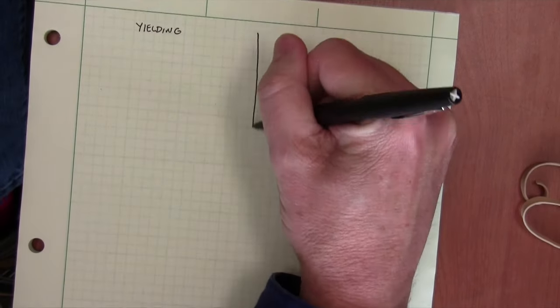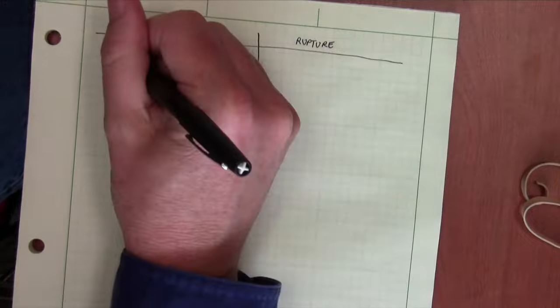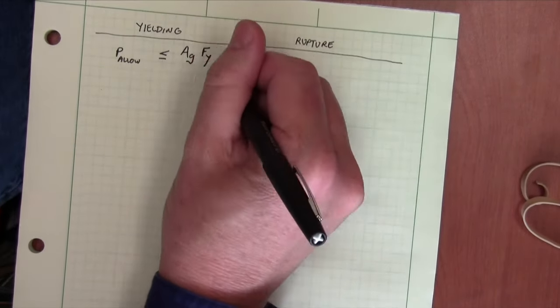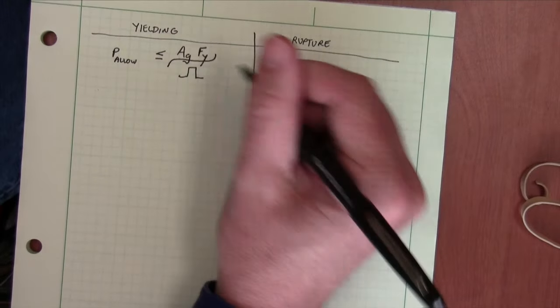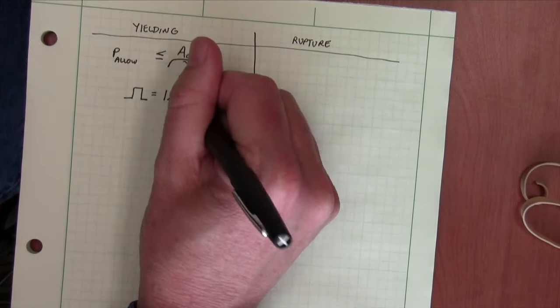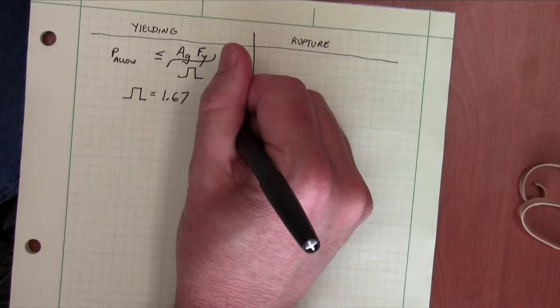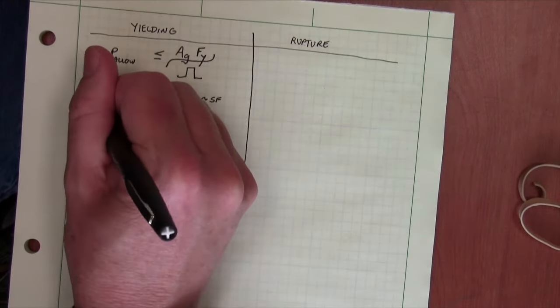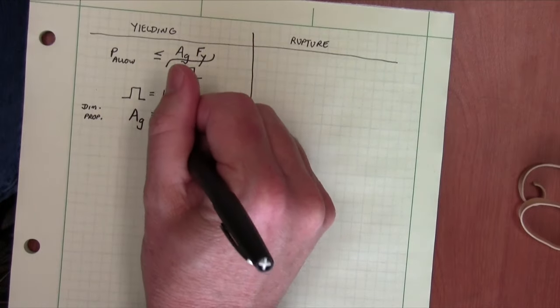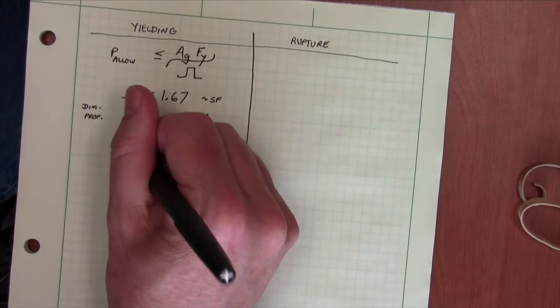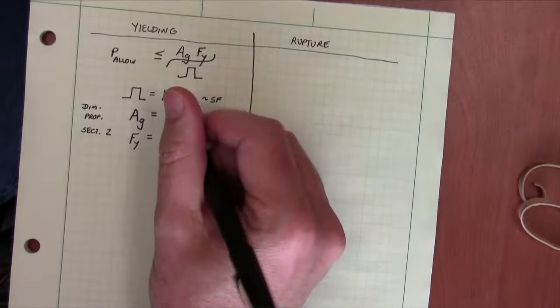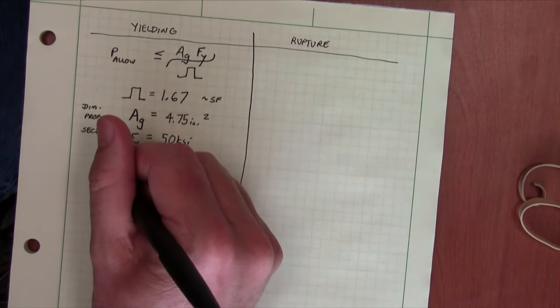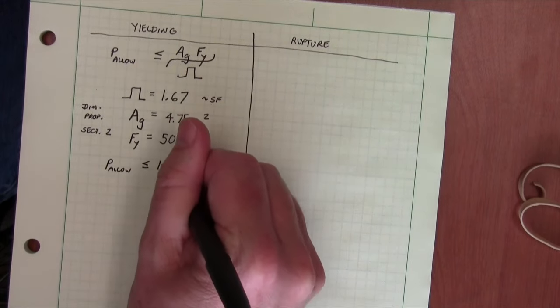So now let's look at the calculation of these values, rupture and yielding. For yielding, the allowable load is equal to the gross area times the yield stress over our safety factor omega. Omega is 1.67 for yielding. The gross area is simply the cross-sectional area of the member that's found in the dimensional properties of the table. And the yield stress f sub y of this ASTM number is 50 KSI. And it's found in section two.